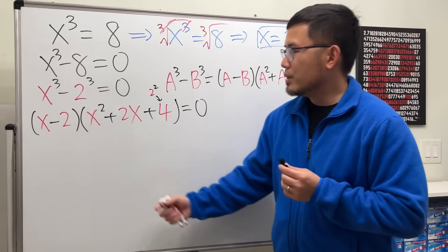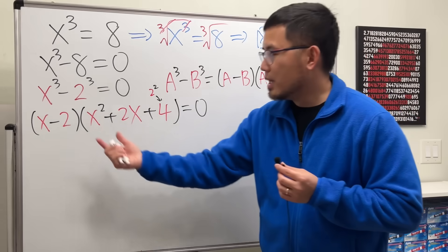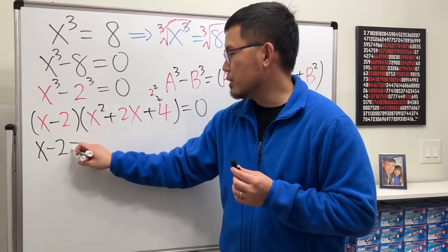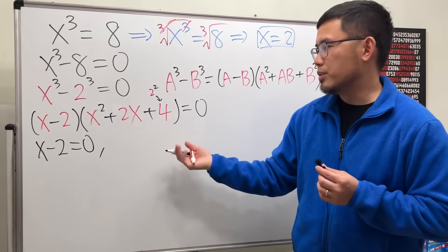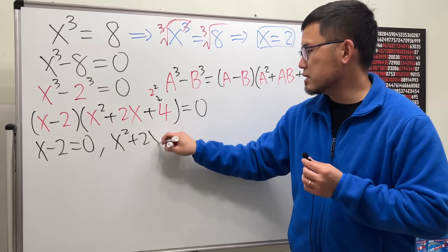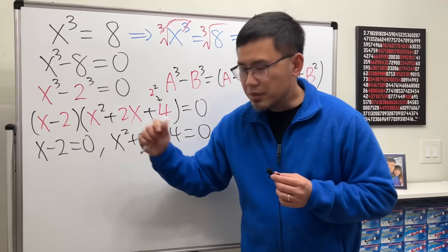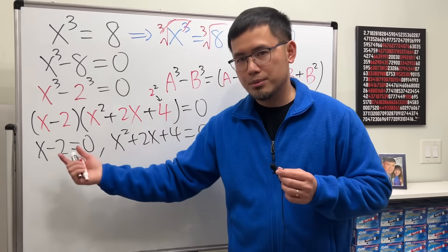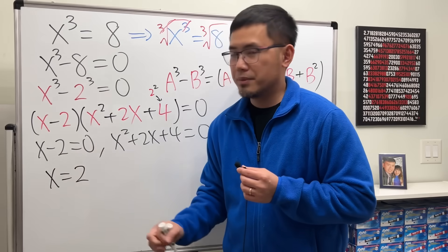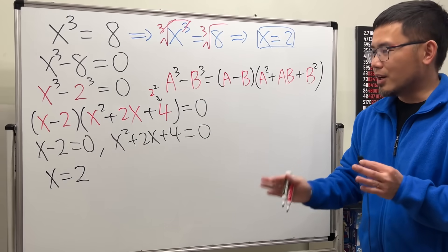Since this product equals zero, we set each factor equal to zero. The first factor gives x minus 2 equals zero, and the second gives x squared plus 2x plus 4 equals zero. From the first equation, adding 2 to both sides gives x equals 2, which confirms what we got before.